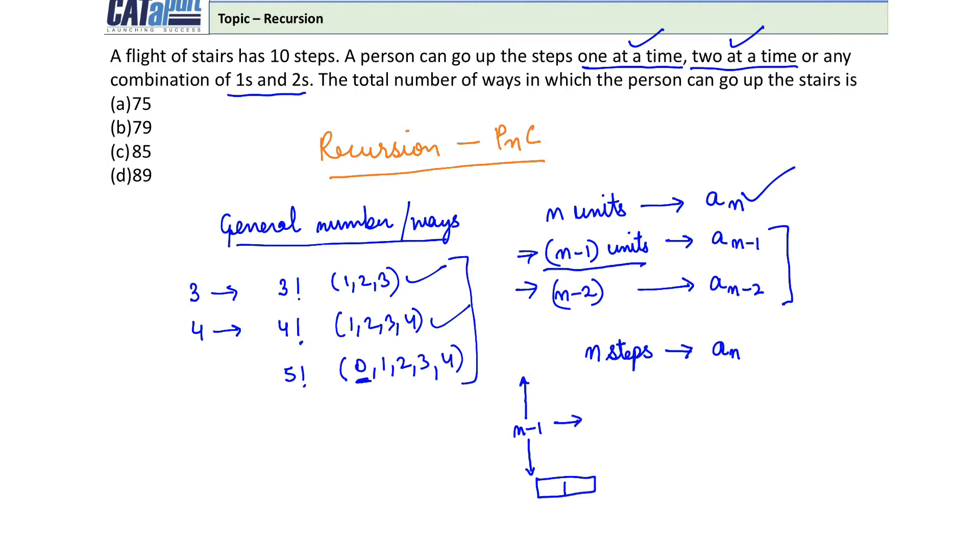Now can you think - are these n minus one steps in the original condition? Yes, because after this we can again take one step, two steps, or any combination of one or two. So these n minus one steps can be traveled in a_{n-1} ways. Similarly, if I take the first step as 2 steps, then how many steps remain? n minus two. Again, these n minus two steps are in the original condition - we can again take first step as one or two, any combination. So the ways to fulfill this are a_{n-2}.